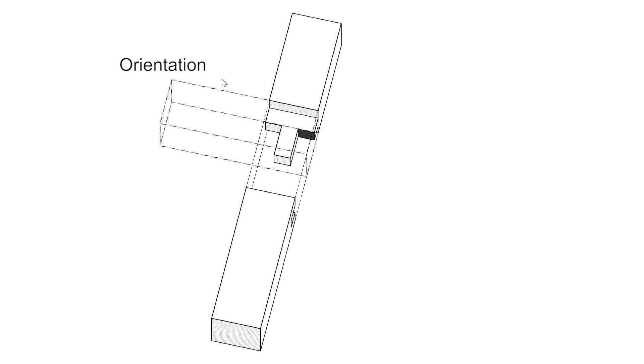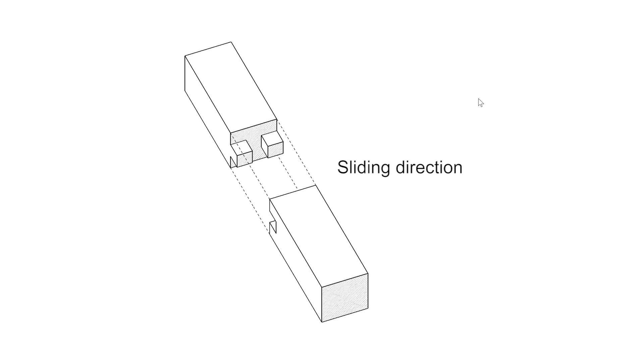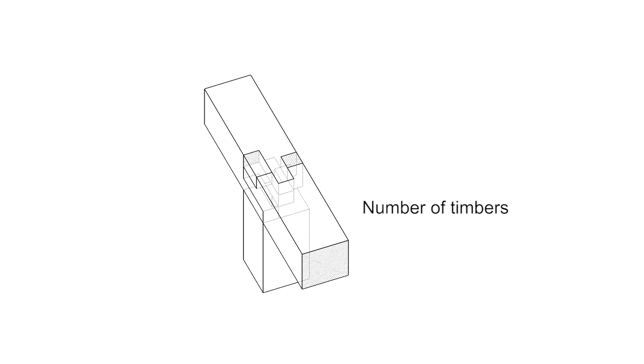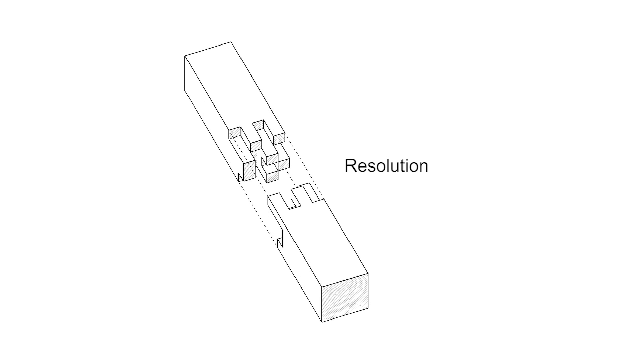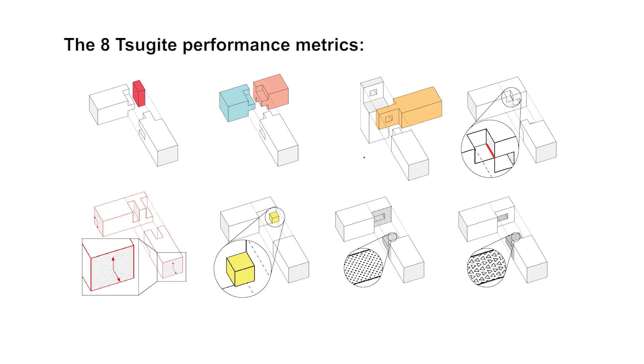The user can edit the orientation and position by dragging the mouse and set the sliding direction, the number of timbers, the voxel resolution, the angle of intersection, and the timber dimensions.